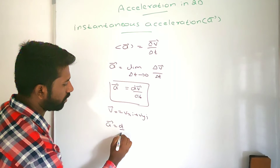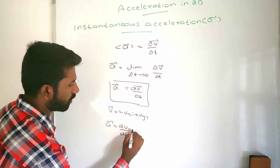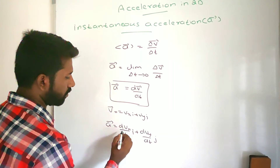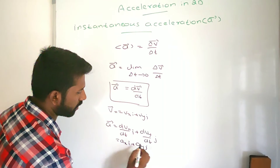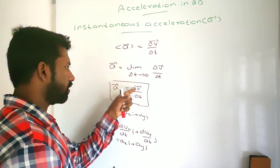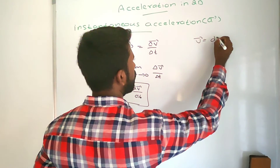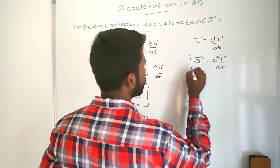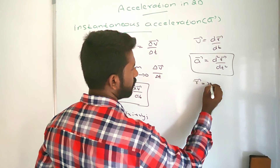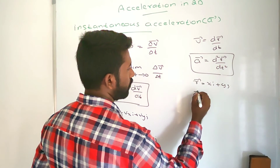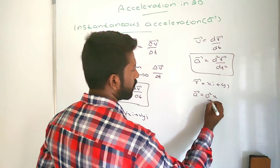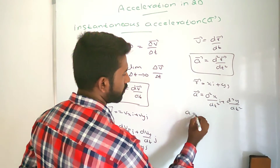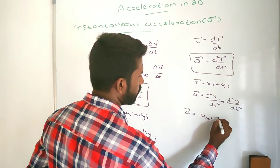The instantaneous acceleration is equal to (dVx/dt) i-hat plus (dVy/dt) j-hat, which gives us the X component Ax and the Y component Ay. Since V equals dR/dt, substituting gives acceleration equal to d²R/dt². With the position vector R having components X i-hat plus Y j-hat, the acceleration becomes (d²X/dt²) i-hat plus (d²Y/dt²) j-hat, that is Ax i-hat plus Ay j-hat.